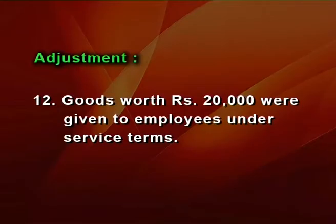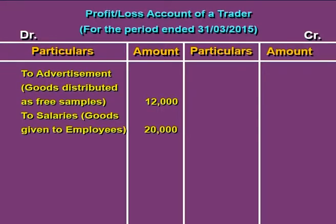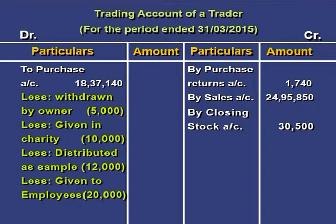The next adjustment: goods worth Rs 20,000 were given to employees under service terms. This is a kind of salary payment so it shall affect the profit or loss account. Rs 20,000 is reported on the debit side of the profit or loss account as an indirect expense under salaries or goods given to employees. The second effect: it is deducted from the value of purchases in the trading account.